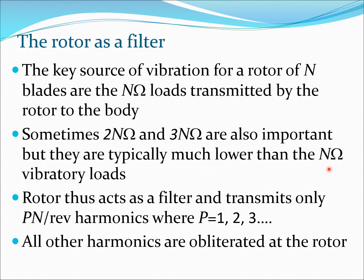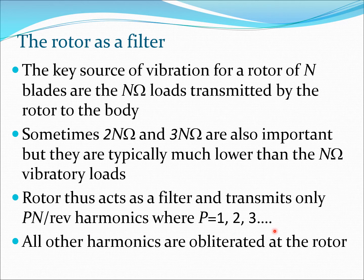For a four-bladed rotor, the four-per-rev loads are the main loads transmitted to the body; the eight-per-rev and twelve-per-rev are very small relative to four-per-rev. The rotor therefore acts as a filter, transmitting harmonics of pN per rev to the fuselage, where p = 1, 2, 3, and so on. All remaining harmonics are effectively obliterated at the rotor — and again, this is only true if all blades are identical.